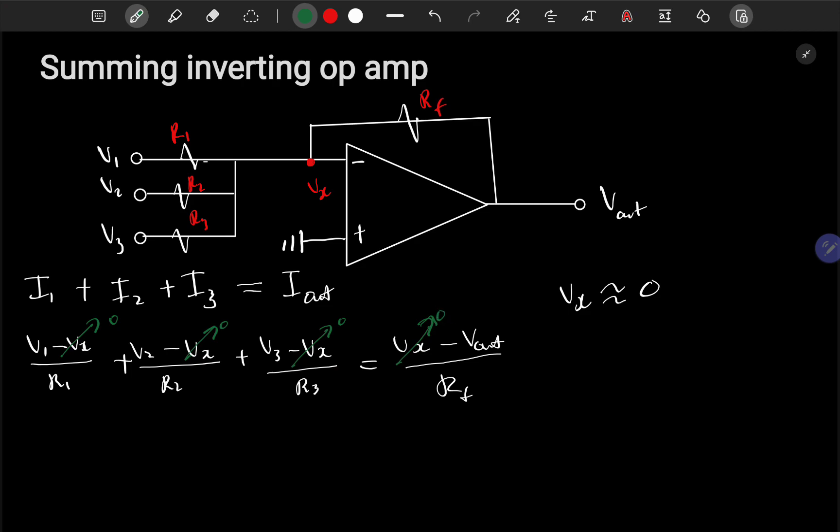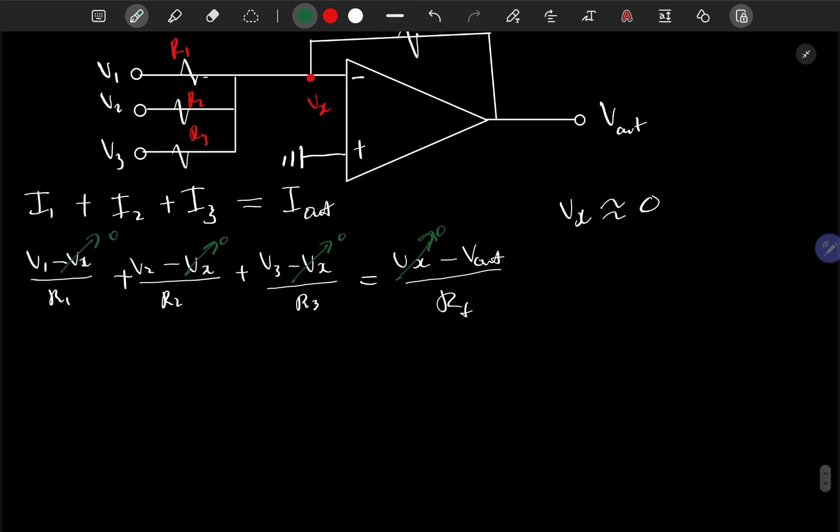And now I can multiply by Rf throughout. If I do that, I will be left with Rf here and Rf here and Rf here with whatever was there.